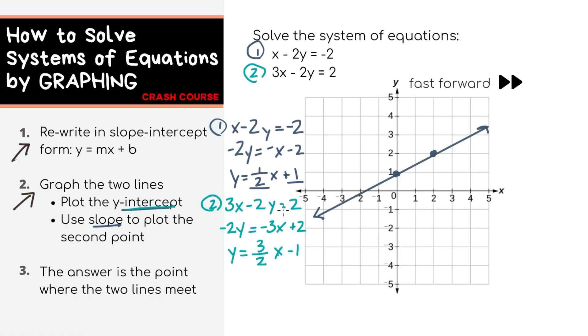Now connect the dots to get the full line. We'll do the same to our second equation. Step number 3, you'll notice that our lines cross at the point 2, 2. So this is actually our answer: x equals 2 and y equals 2.